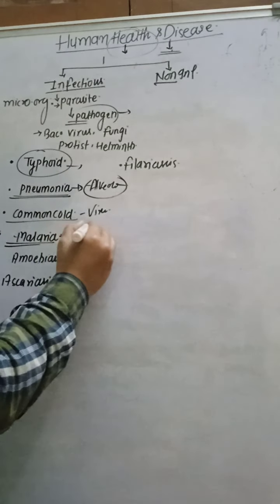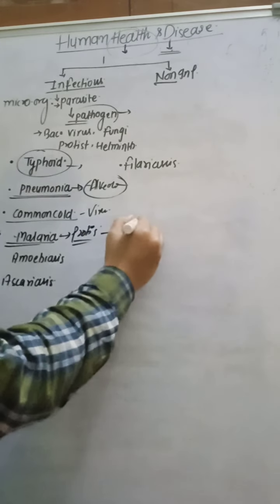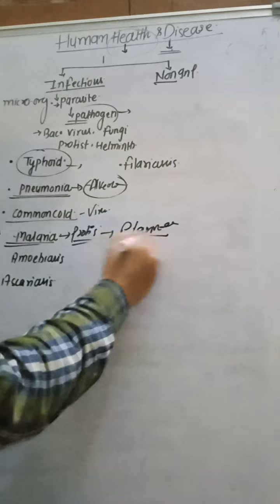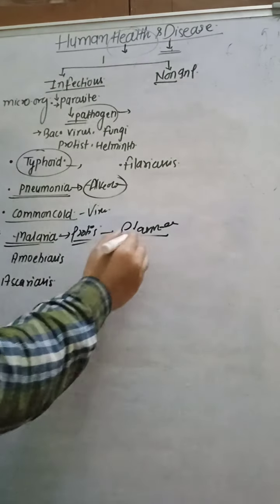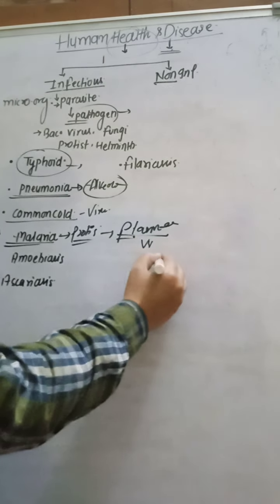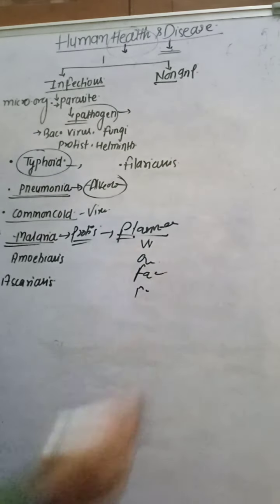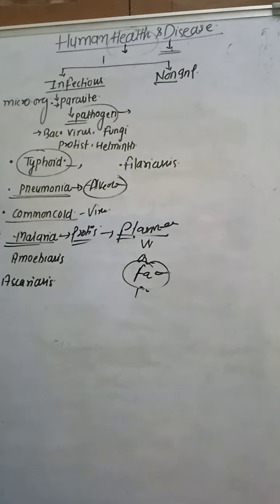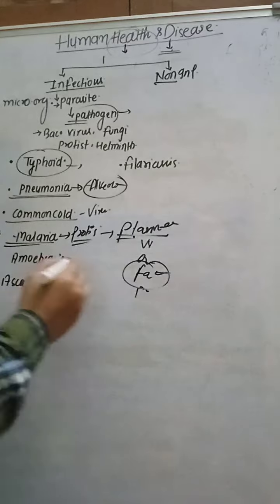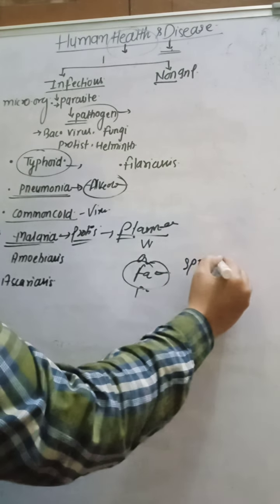Next is malaria, caused by the protist Plasmodium - very important. The vector that carries the Plasmodium parasite is the female Anopheles mosquito. The parasite completes its life cycle in two hosts: the human host and the female Anopheles mosquito. There are many Plasmodium species: P. vivax, P. ovale, P. falciparum, and P. malariae. Plasmodium falciparum is the most dangerous and fatal, causing malignant malaria and death.